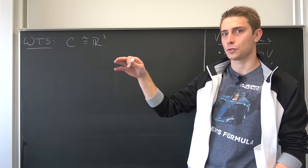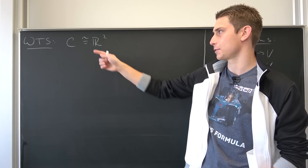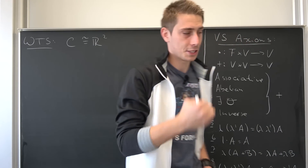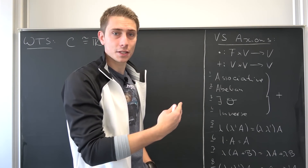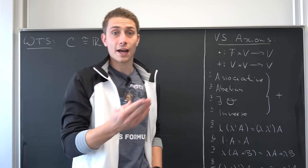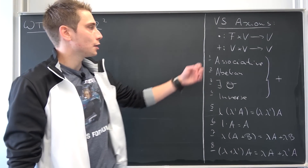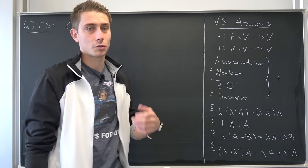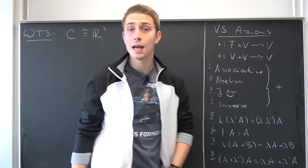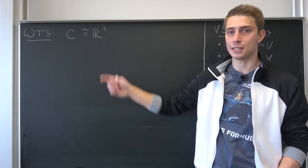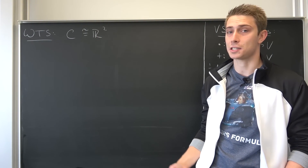R² is the set of all two-by-one matrices — two-entry vectors with real number entries. This is R² by definition. R², or more generally R to the nth power, is indeed a vector space. You can check this for yourself using the vector space axioms.